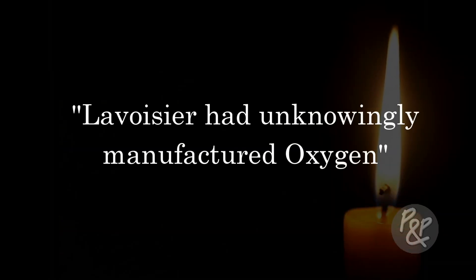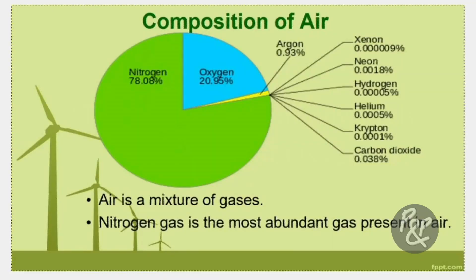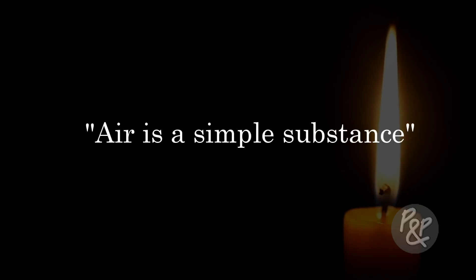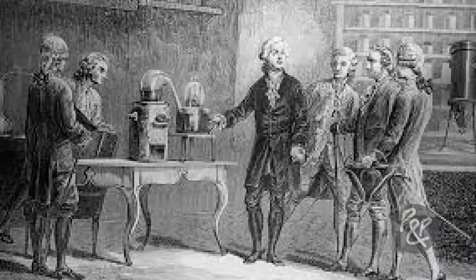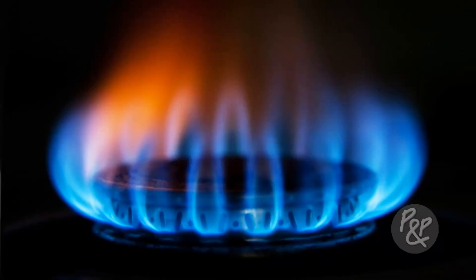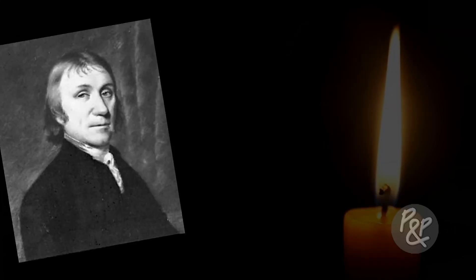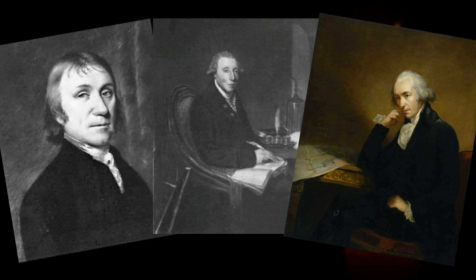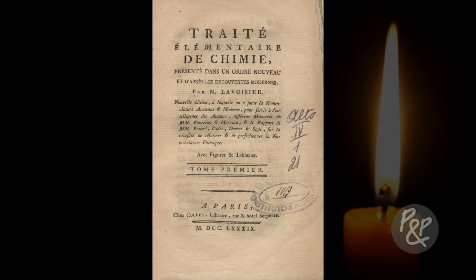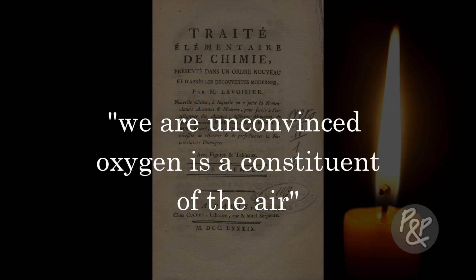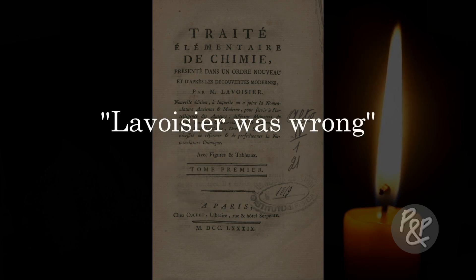After the mercury cooled and contracted, the air that had been absorbed into the mercury was concentrated into oxygen. In other words, Lavoisier had unknowingly manufactured oxygen through callogenating the mercury with plain air, and there was no oxygen as part of the air to begin with. This means air is a simple substance and is not made up of constituents as Lavoisier later put forward. Given this, we can understand why much controversy existed when Lavoisier introduced his new oxygen theory. People like Priestley and other notable figures were unconvinced by his assertions. After looking at Lavoisier's work some 250 years later, we too are unconvinced that oxygen is a constituent of the air, and we're of the opinion Lavoisier was wrong.